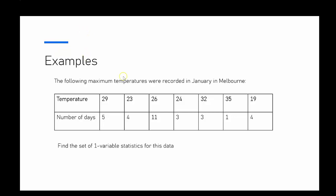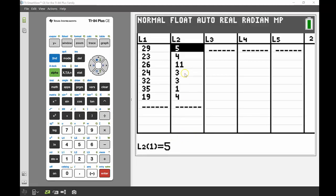Now say our example had a frequency list involved as well. We're looking at temperatures across January — the maximum temperatures — and to save time entering data we're going to use those same temperatures again. So instead of the temperature of 29 occurring on one day, we have it occurring on five days; 23 on four days; 26 on eleven days; and so on. It's still one variable statistics because if you listed it out it would be 29 five times, followed by 23 four times, etc. — we just consolidate it by saying how many times each value occurs. I'm going to enter those frequency values into List 2.